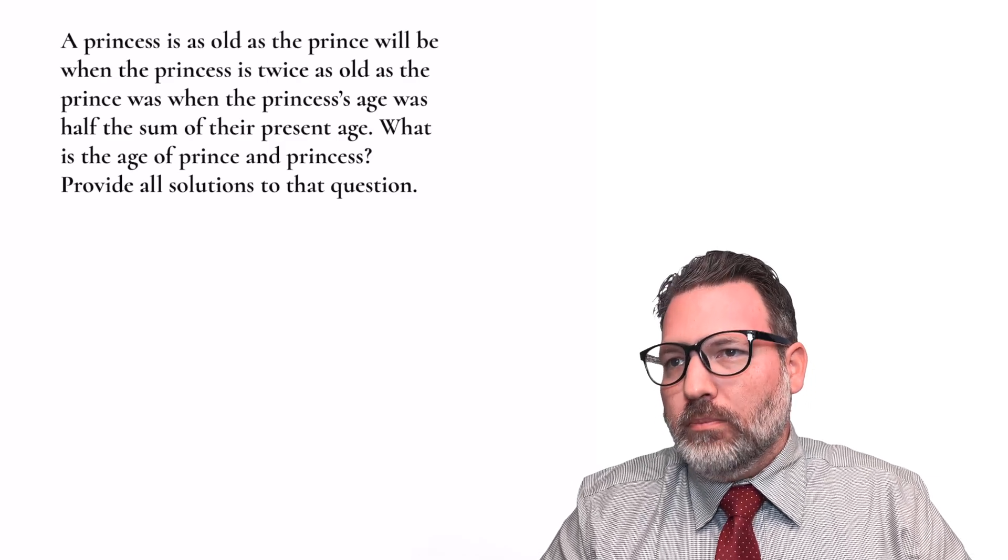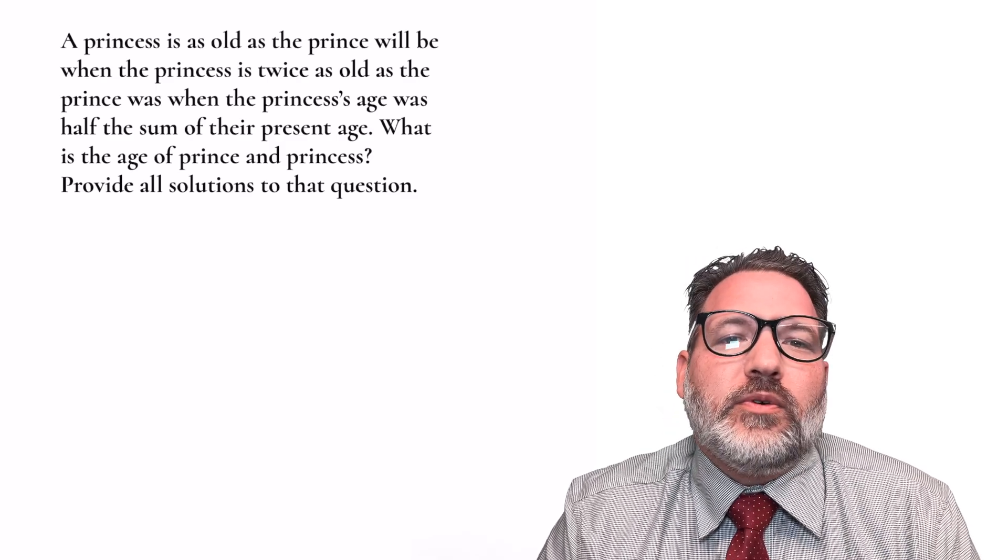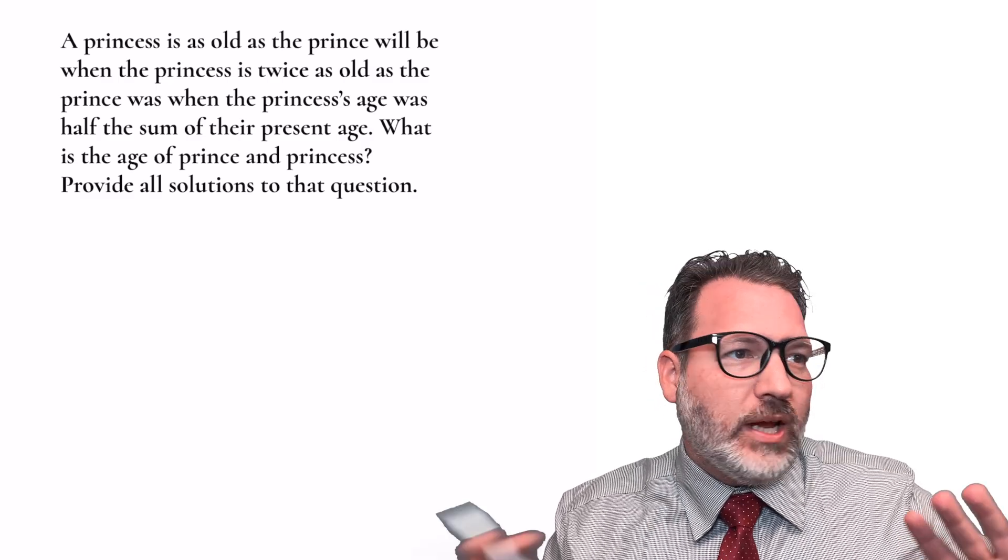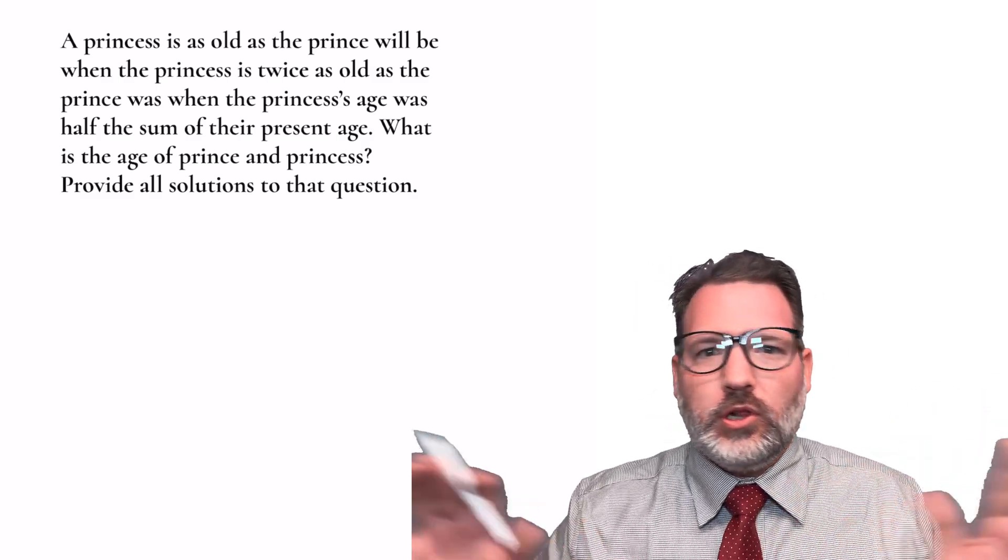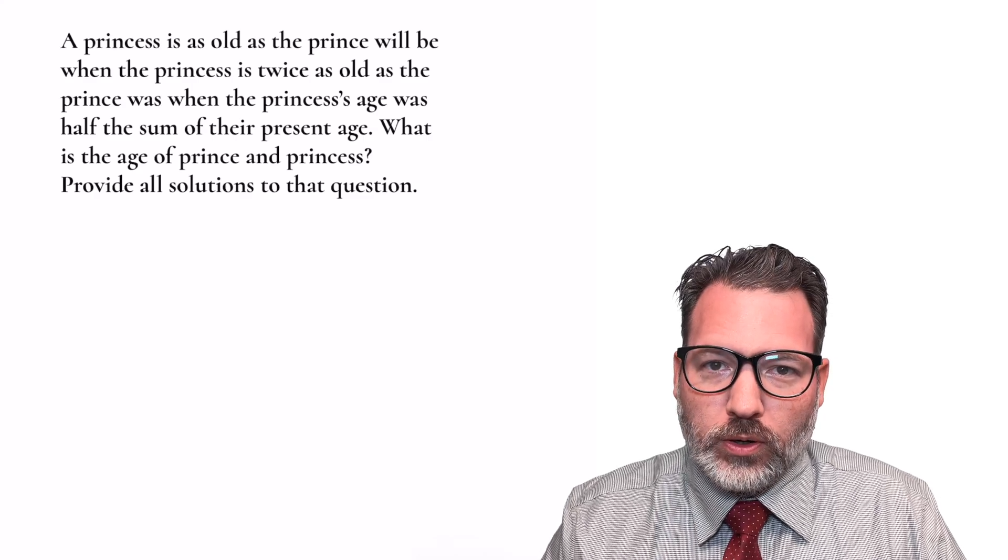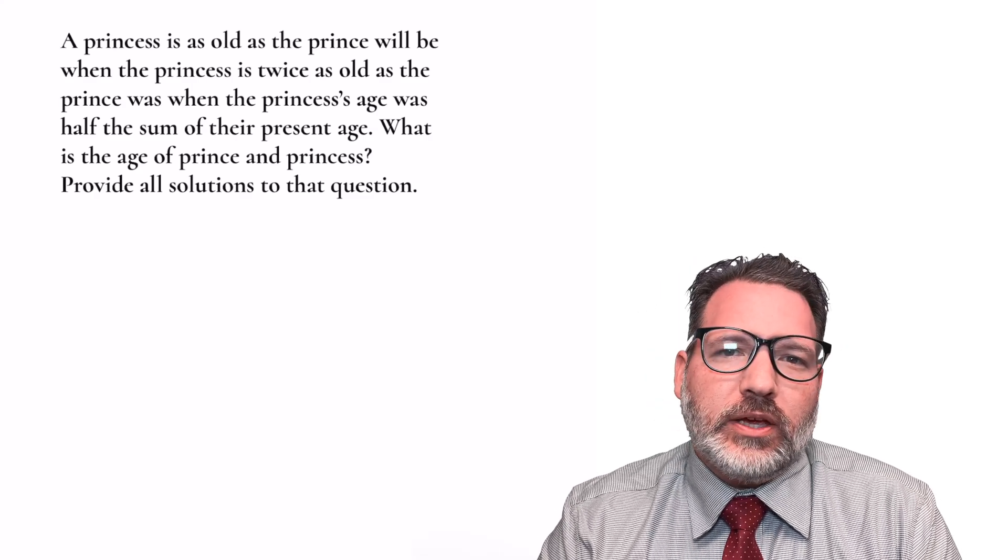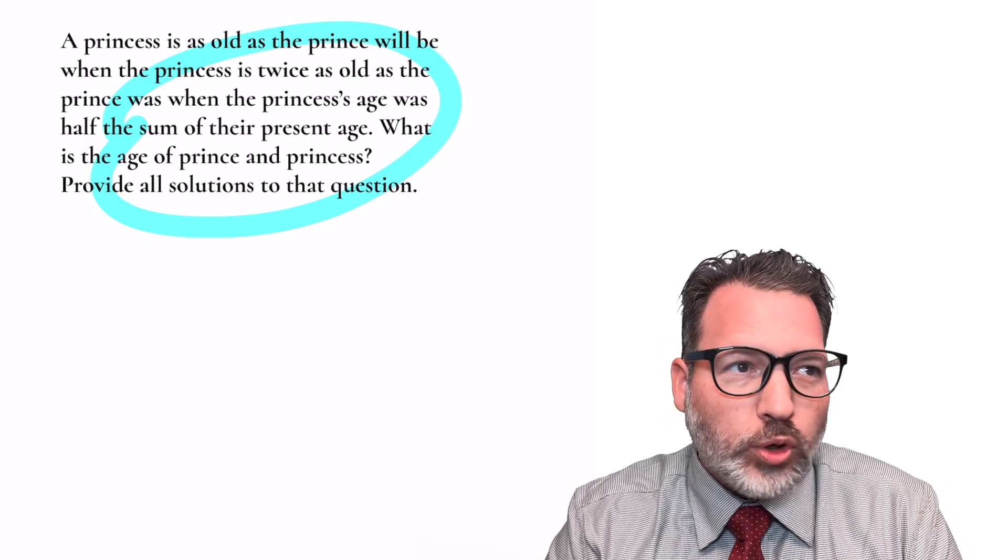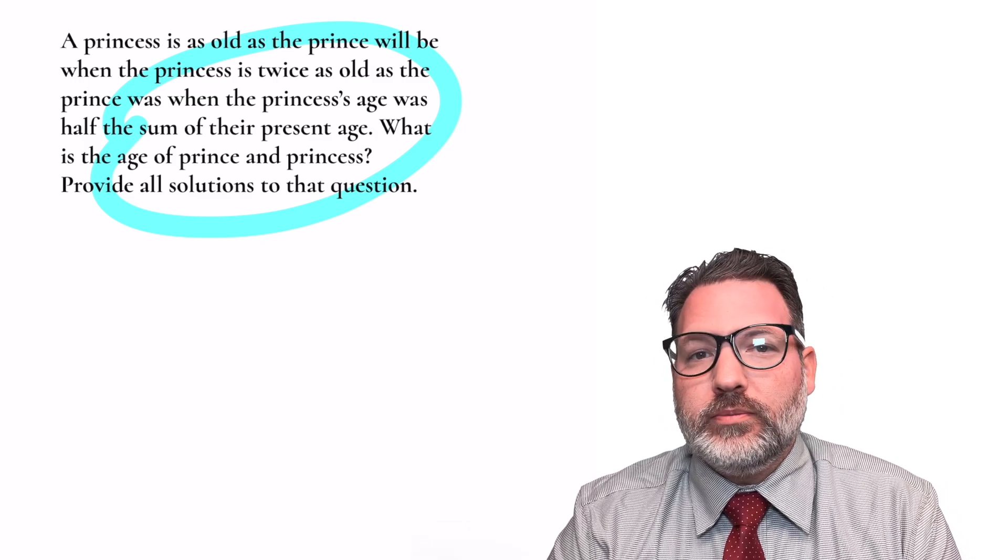last week announced O1 Preview, which is supposed to be the most advanced reasoning system available for artificial intelligence. It's supposed to be able to answer all kinds of questions that ChatGPT 4, 4.0, Claude, whatever, couldn't answer before. And to illustrate the prowess of this particular AI system, they used this admittedly pretty difficult word problem, riddle, math problem, whatever.